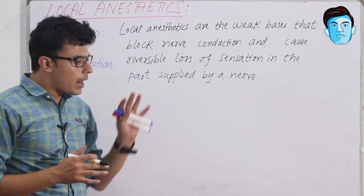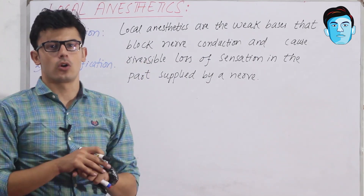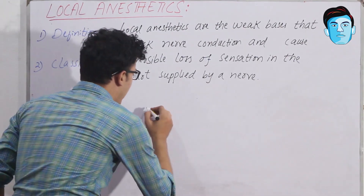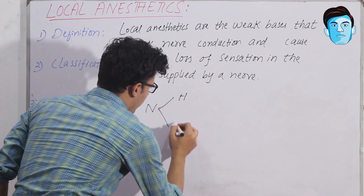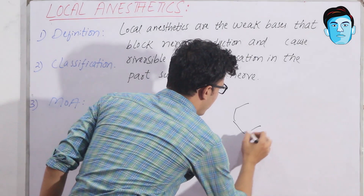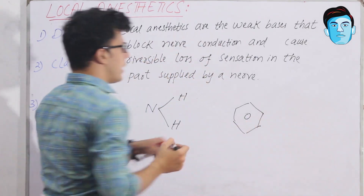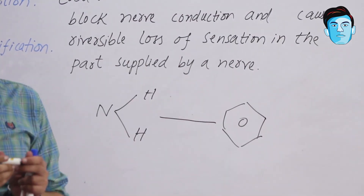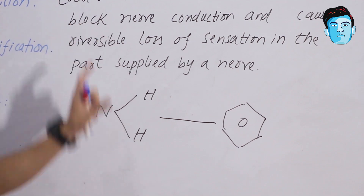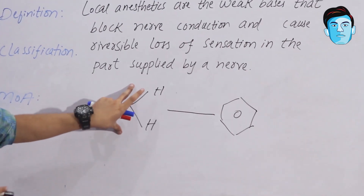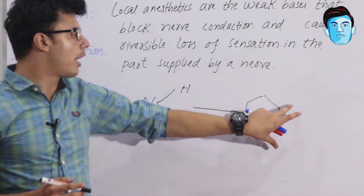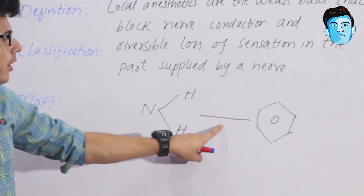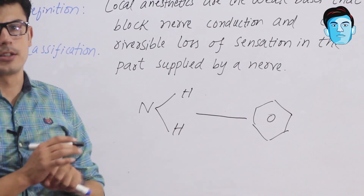Now if we look at the parts of local anesthetics, there are three parts. We have a hydrophilic portion, a lipophilic portion which is the benzene ring, and in between there will be a bond in the form of esters or amides. So local anesthetics contain a hydrophilic portion and a lipophilic portion, and between them there is a bond in the form of esters or amides.